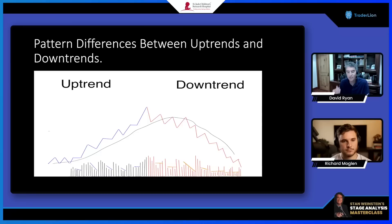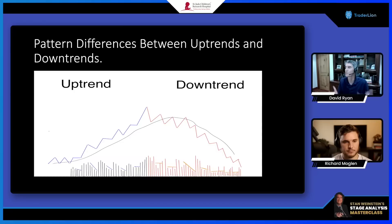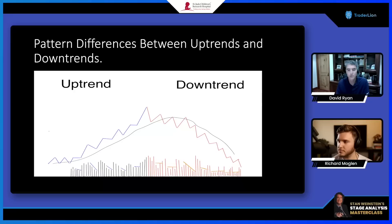It declines on big volume again and then repeats over and over. I know it's basic, but if you can just identify an uptrend versus a downtrend, you put the odds in your favor of being on the right side of the market. The things I use are very simple — if I could cut everything down to two things, it would just be price and volume, eliminate everything else, and I'd do fine.